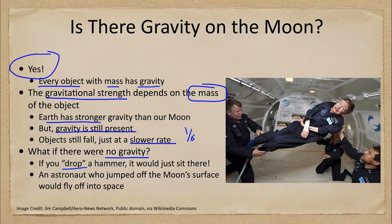So you would just float there in space. If you were up on the International Space Station, you would be essentially in a zero gravity or microgravity environment. And if you let go of something, it would just sit there. So that would be the difference.